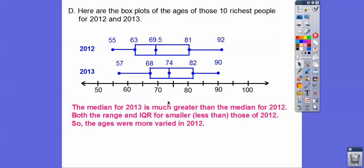What that means is their ages were more varied in 2012. The age variance varied quite a bit more. It went from 55 all the way up to 92. I guess this 92 year old either lost all his money or died. By 2013, the variance decreased quite a bit.